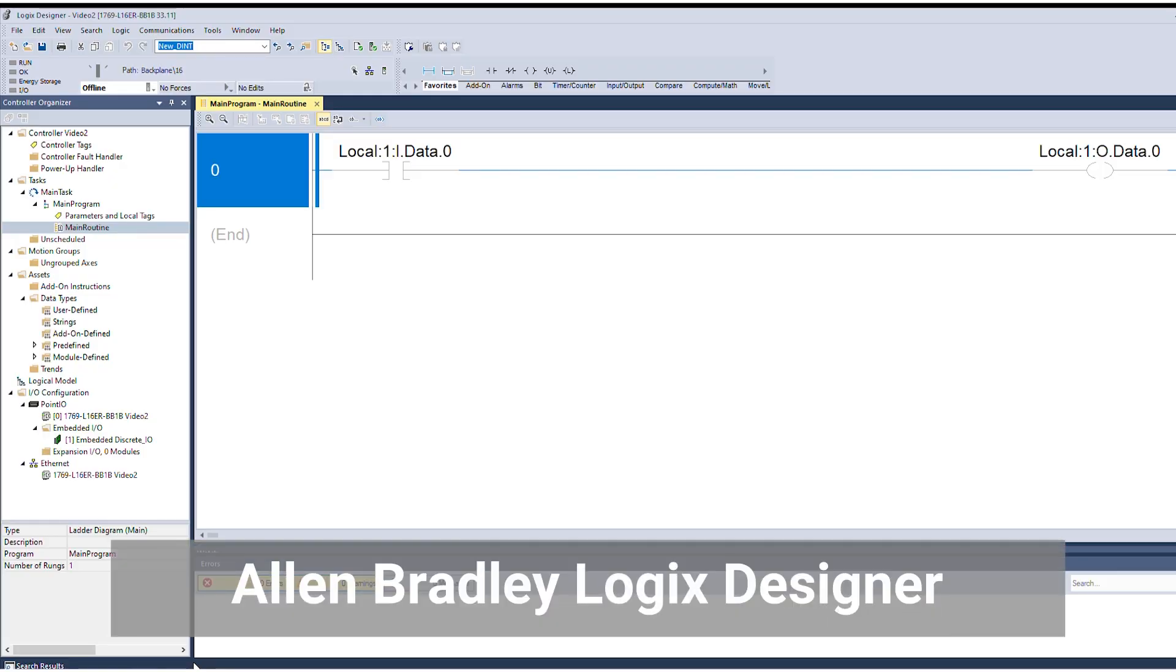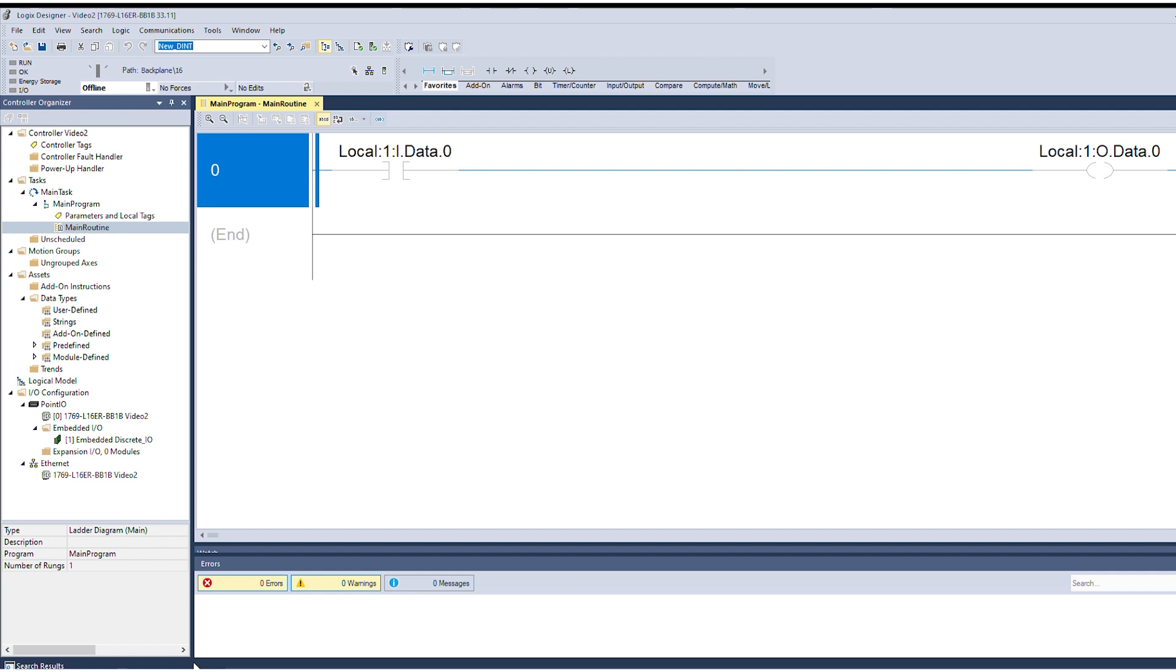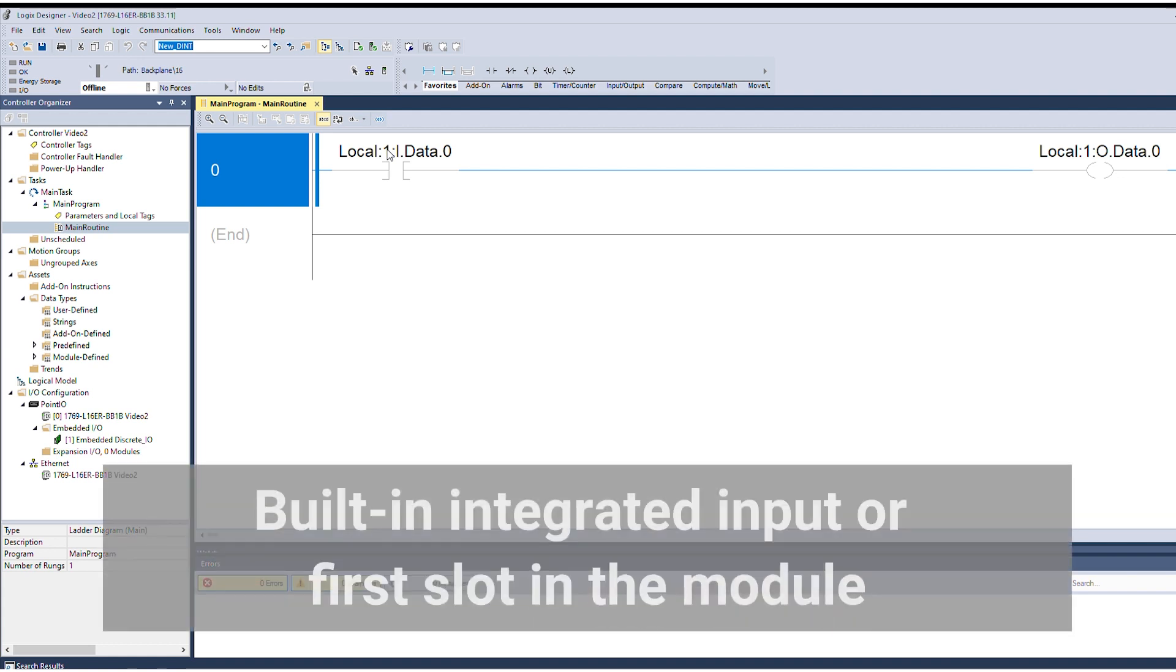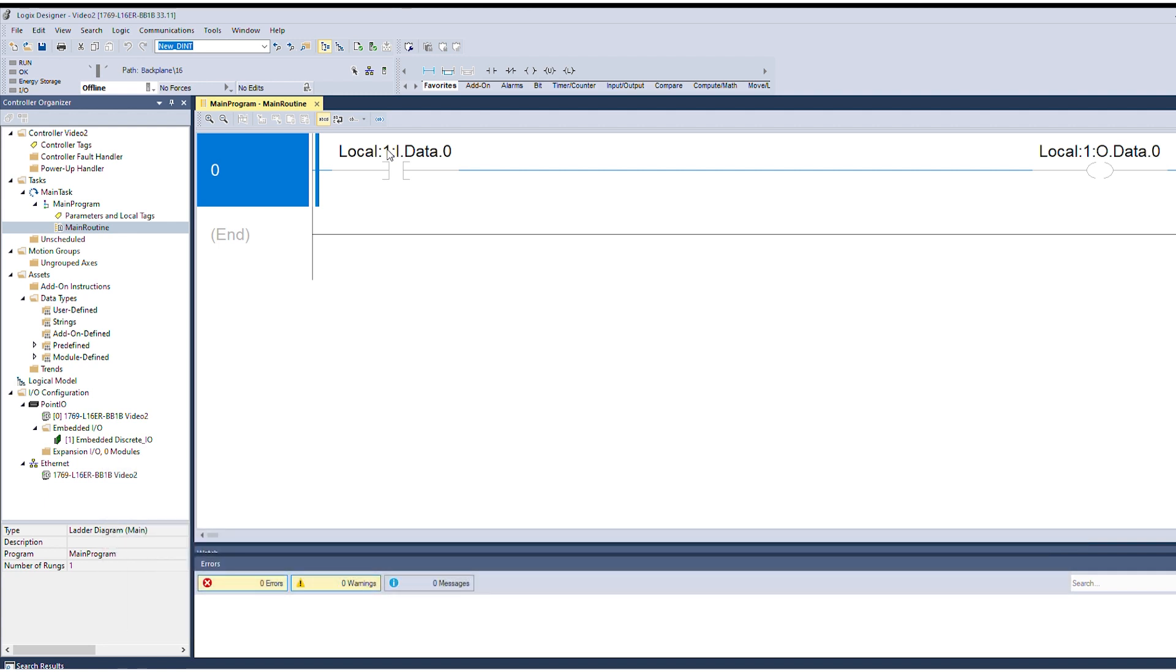In this first example, let's take a look at the Allen-Bradley Logix Designer setup that'll allow us to program a single input to turn on or energize a single output. Now, the way these addresses work is that the first address, local1idata0, refers to the built-in integrated input, or it might refer to the first slot in a module setup, and the first card in the first terminal, which is the data.0 of that card. Now as you can see in this line, we have it set up as looking for electricity to be energized through that circuit, and when that happens, the electricity in the output also energizes in local1O for output data 0, terminal 0. So input terminal 1 will activate output terminal 1, labeled as terminal 0, but they are the first one in line.